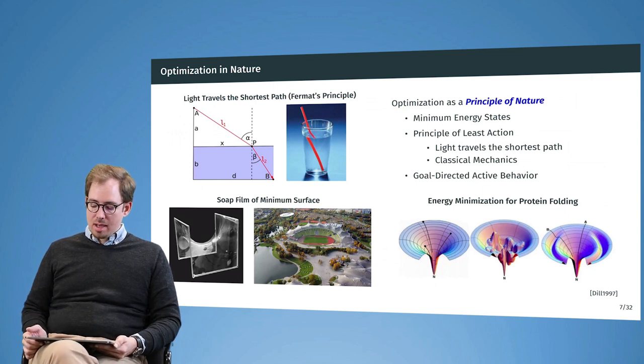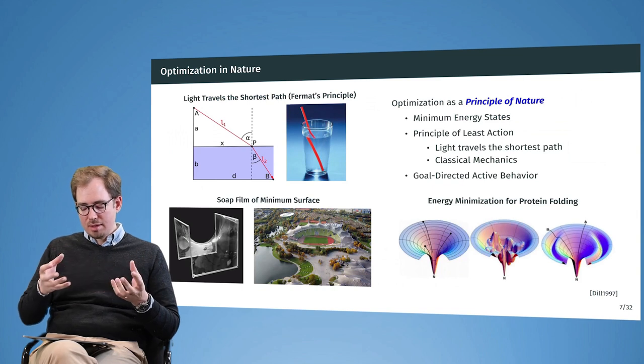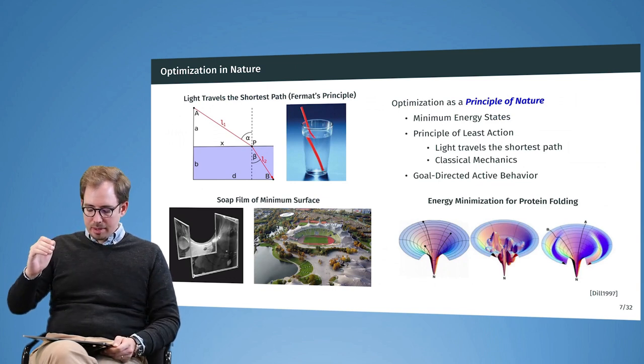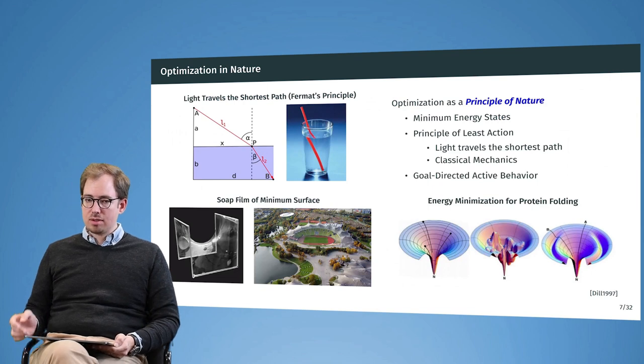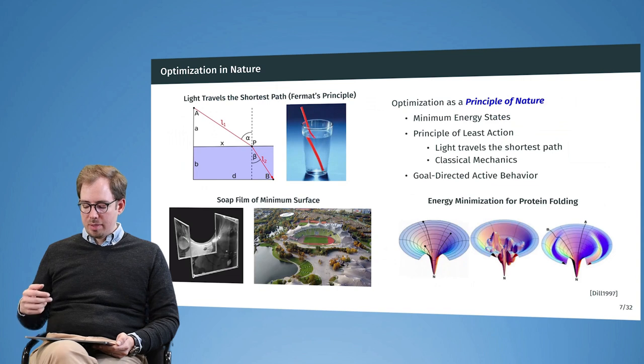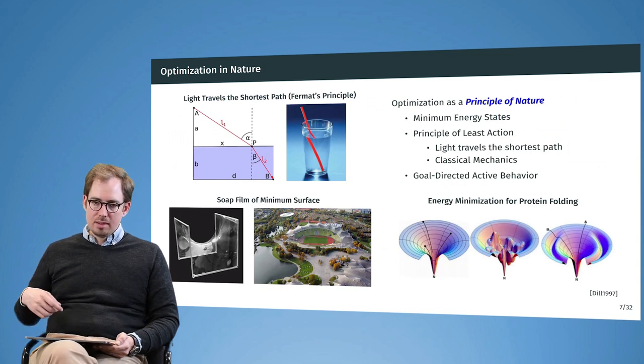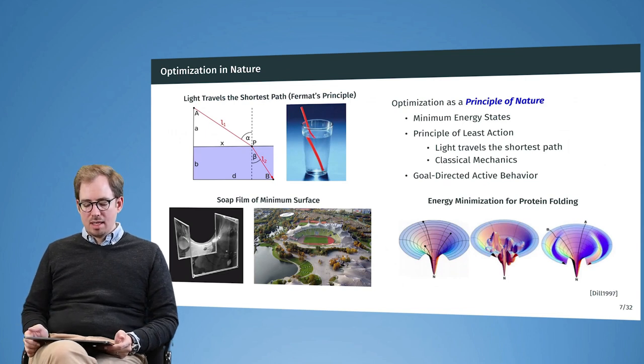This has been used, for example, by Frei Otto in his very famous design of the Munich Olympic Park. This is a quite difficult optimization problem, and nature is doing this without thinking about it, quote unquote. The last example that you see on the right side is energy minimization for protein folding. The proteins in your body—for example, DNA—they are folding in a way that the free energy is minimized. It wants to get into a very stable state where all the energy has been dissipated. The problem here is that there are many, many different ways that a protein can fold, and nature is finding a way to get to this minimum energy state.